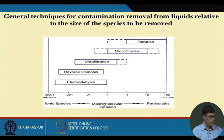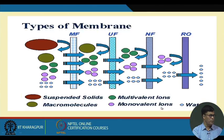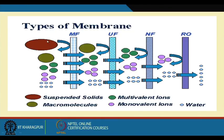Pictorially, this can be explained as follows: a mixture comprised of different types of particles is separated progressively using membrane filtration, then ultrafiltration, then nanofiltration, then reverse osmosis — showing how smaller and smaller particles are separated from the mixture.